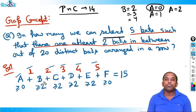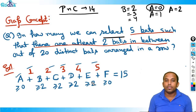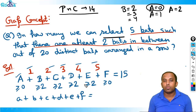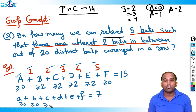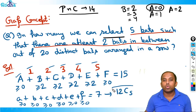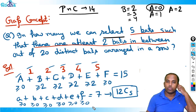So we just find the number of integral solutions. The conditions are: B, C, D, E each must be at least 2, so give 2 to each — that's 2+2+2+2 = 8. So 15 minus 8 leaves us with 7. Now all variables can be zero, so we apply the shortcut: 7 + 5 = 12, with five plus signs. The answer is 12C5.